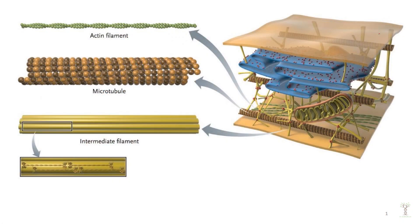Here we have a diagram of a section of a cell. You can see the plasma membrane, the rough endoplasmic reticulum inside, and a mitochondrion. That orients you to the fact that we have a bunch of different proteins inside the cell.